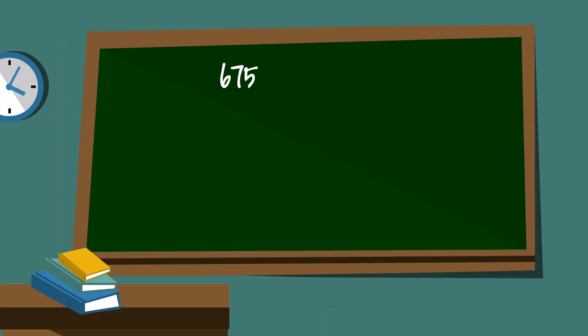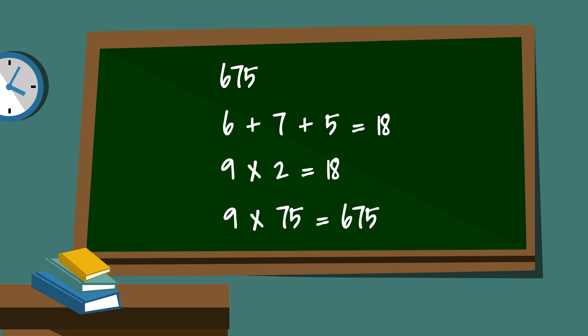Next is 675. Again, add the digits together: 6 plus 7 plus 5 is 18. 18 is divisible by 9, so 675 is divisible by 9. In fact, 9 times 75 is 675.